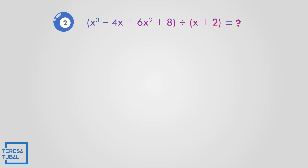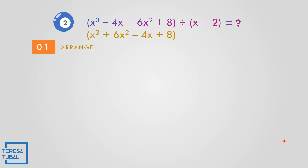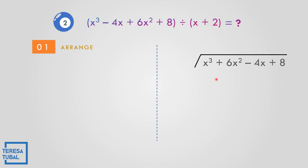How about number 2? Divide x cubed minus 4x plus 6x squared plus 8 by x plus 2. First, arrange: x cubed, then 6x squared, then negative 4x, then plus 8. So we divide x cubed plus 6x squared minus 4x plus 8 by x plus 2.